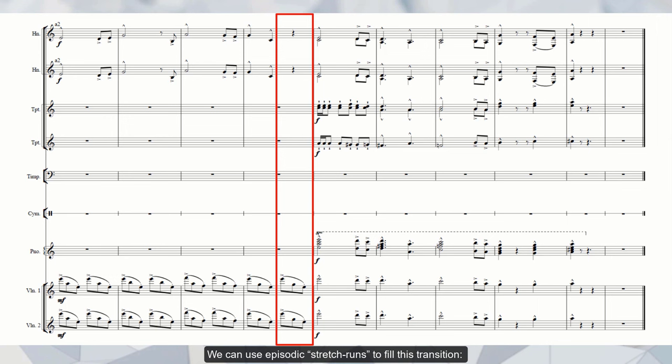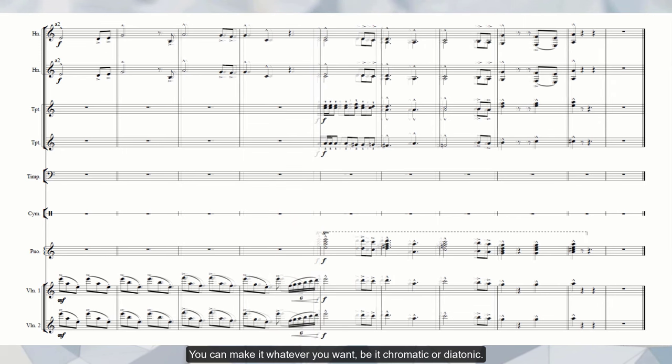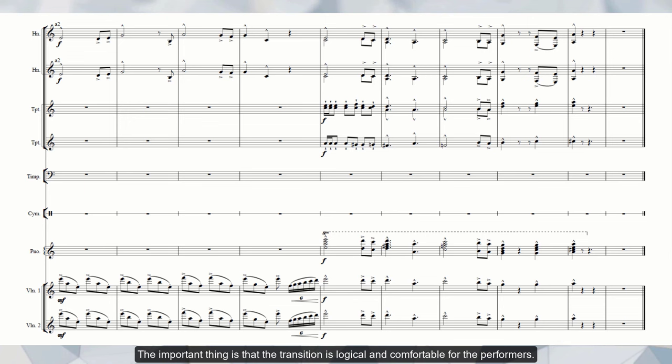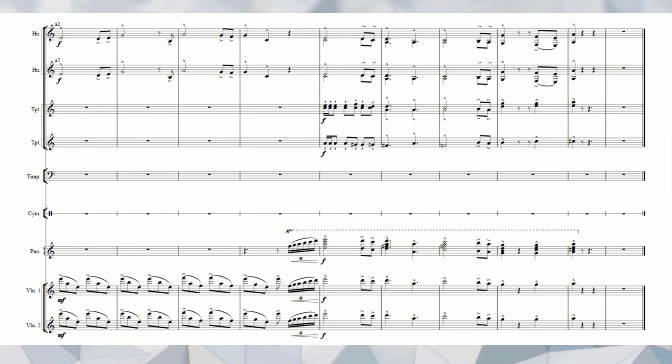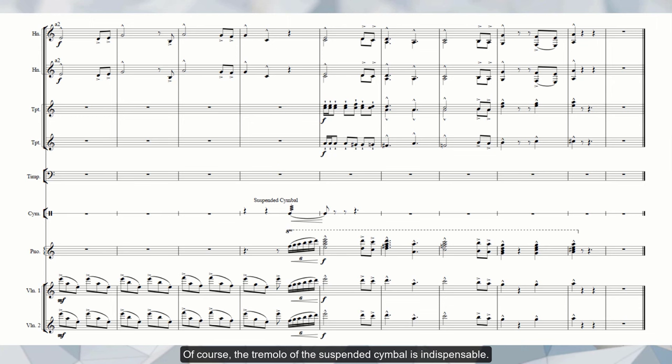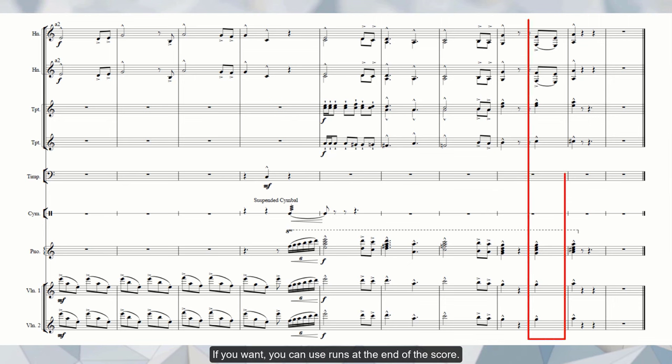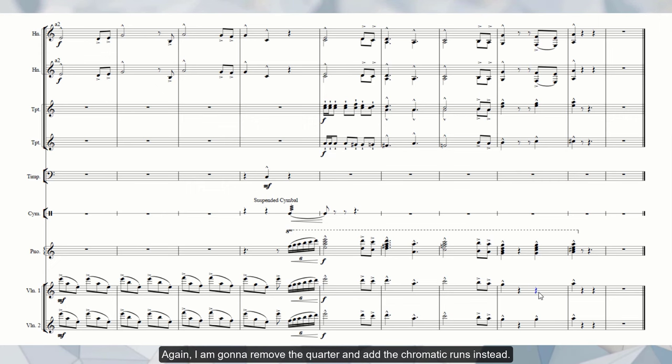We can use episodic stretch runs to fill this transition. So we have to replace the last sixteenth part of the previous bar with runs. You can make it whatever you want, be it chromatic or diatonic. The important thing is that the transition is logical and comfortable for the performance. We can add the same to the piano. Of course, the tremolo of the suspended cymbal is indispensable. Also, it will be interesting if we emphasize the upbeat of the French horn with the timpani. If you want, you can use runs at the end of the score. Again, I'm going to remove the chord and add the chromatic runs instead.